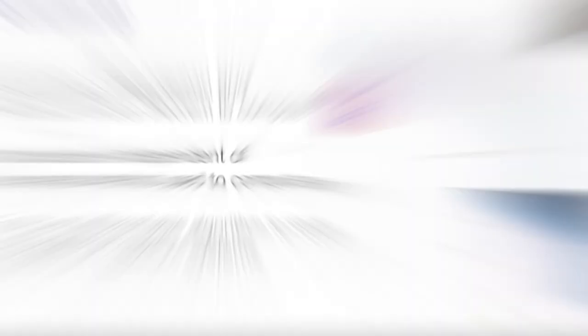In summary, we use automatic differentiation and the implicit function theorem to compute the gradient of the steady state with respect to any parameter of our model. Our procedure is independent of the numerical method used to compute the steady state, meaning we do not need to store in memory how we solve for the steady state. This is an end-to-end differentiable algorithm that allows to study non-equilibrium quantum systems.